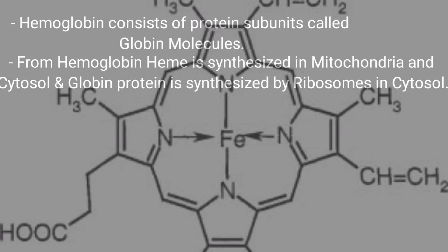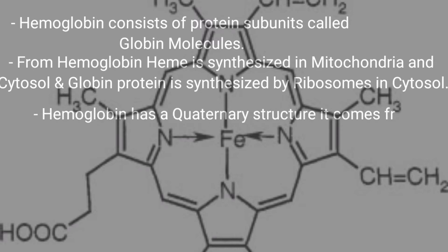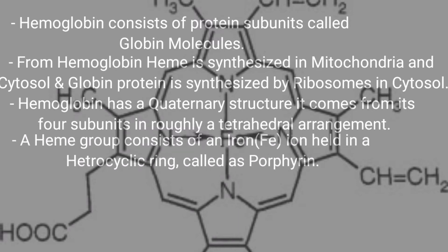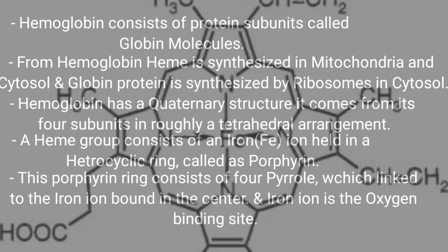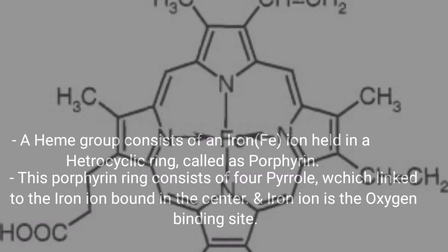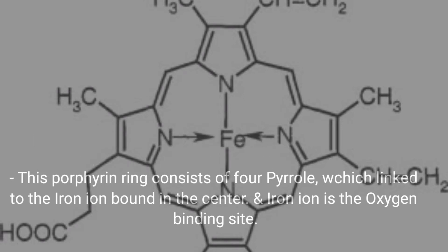Hemoglobin consists of protein subunits called globin molecules. Heme is synthesized in the mitochondria and cytosol, and globin proteins are synthesized by ribosomes in the cytosol. Hemoglobin has a quaternary structure, coming from its four subunits in a roughly tetrahedral arrangement. A heme group consists of an iron atom held in a heterocyclic ring called porphyrin. This porphyrin ring consists of four pyrrole units linked to the iron, which is the oxygen binding center.